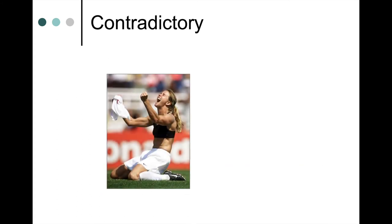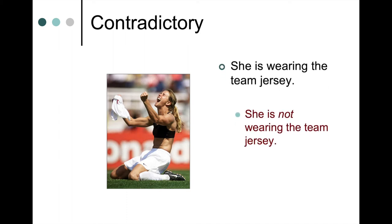Here's another example: She is wearing the team jersey. She is not wearing the team jersey. Again, the statements cannot be true at the same time, and their denials are also incompatible. The denial of the first statement is 'she is not wearing the team jersey,' and the denial of the second statement is 'she is wearing the team jersey.' The denials are also incompatible — neither the statements nor their denials can be true at the same time. So we call those contradictory statements.